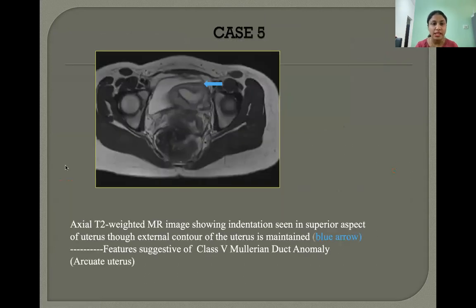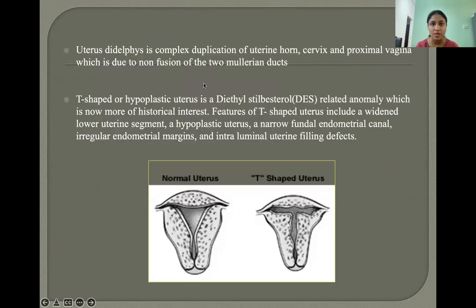Case 5: Axial T2 weighted MR image shows an indentation seen in the superior aspect of the uterus, though the external fundal contour is maintained. These features are suggestive of class 6 Mullerian duct anomaly, arcuate uterus.